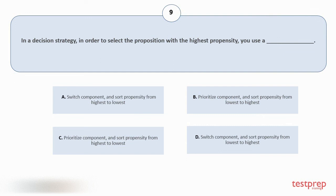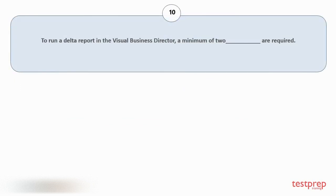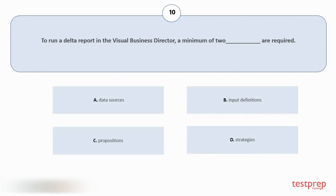Question number ten: To run a Delta report in the Visual Business Director, a minimum of 2 what are required? Your options are: A) Data Sources; B) Input Definitions; C) Propositions; D) Strategies. The correct answer is option A.